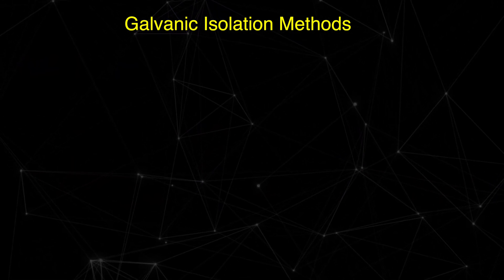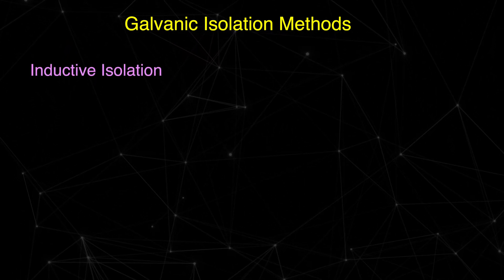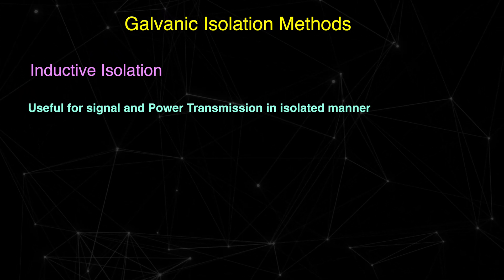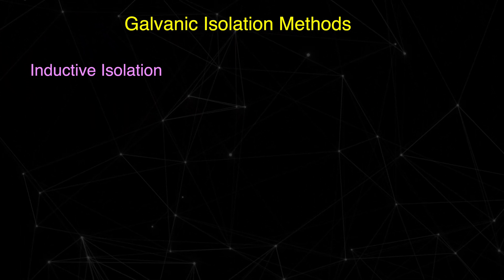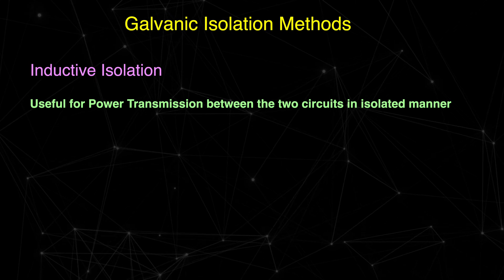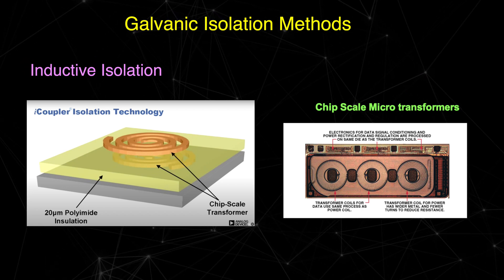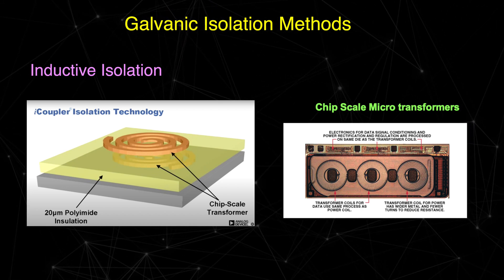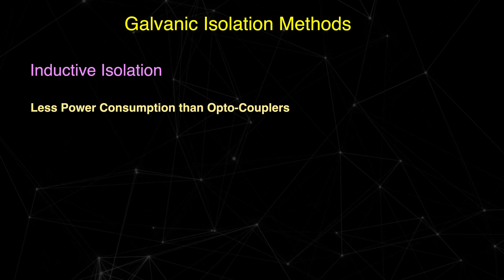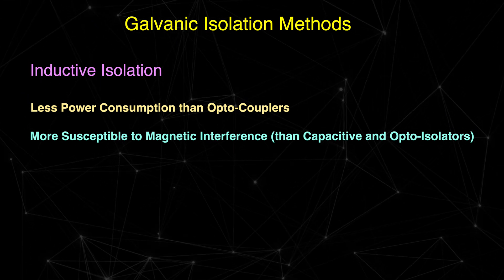For high data rate communication, inductive and capacitive isolators are used. Using inductive isolation, we can transfer both signals as well as power, and the transformer is the classic example of this inductive isolation. When we want to transfer power between two circuits in an isolated manner, isolation transformers are typically used. Inductive isolation is also used for signal transmission and can transfer signals at high data rates. The power consumption in inductive isolation is lower compared to opto-isolators, but this technique is more susceptible to magnetic noise.